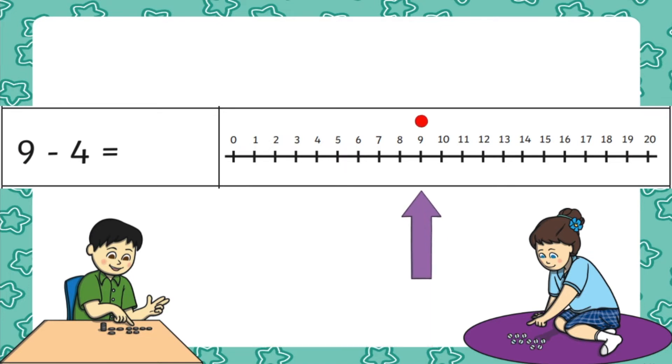Your children have to begin by looking at where they need to start on the number line. They can then jump back on the number line to subtract the correct number and find their final answer.